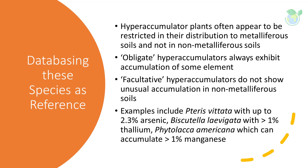Hyperaccumulator plants often appear to be restricted in their distribution to metalliferous soils and not non-metalliferous soils, and they are broadly split into two categories. Obligate hyperaccumulators always exhibit accumulation of some element, whereas facultative hyperaccumulators do not show unusual accumulation in non-metalliferous soils. Examples of well-understood species include Arabidopsis halleri with up to 2.3% arsenic, Biscutella laevigata which can accumulate more than 1% thallium, and Phytolacca americana which can accumulate more than 1% manganese.